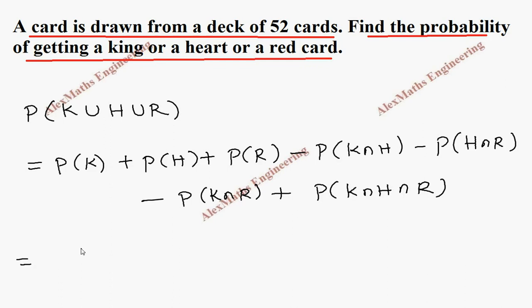P of K, totally there are 4 kings out of 52. P of H which is 13 out of 52.